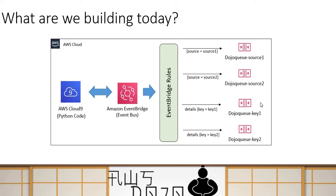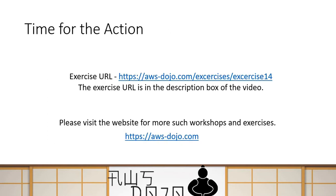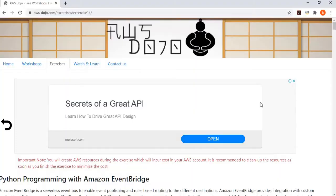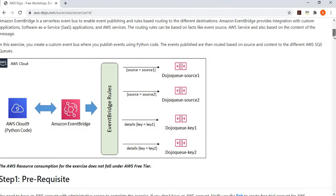This is what we are going to build today in the exercise. In order to run this exercise, we have created and published it to the aws-dojo.com website. You can simply follow the instructions there to implement this scenario end-to-end and learn how AWS EventBridge works. The URL of this exercise has been provided in the YouTube description box below. But let me walk you through the steps of this exercise anyway. If I go to my website, aws-dojo.com, you can see this exercise has been provided with step-by-step instructions.